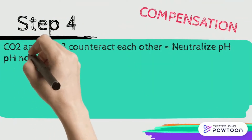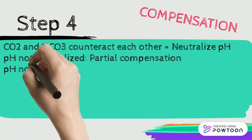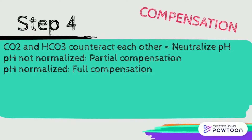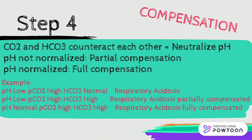Step four is checking for compensation. CO2 and bicarb counteract each other to neutralize the pH and bring it back to normal. If they're counteracting each other but haven't normalized the pH yet, this is partial compensation. If they've fully compensated, this is a fully compensated disturbance. For example, if the pH is low, CO2 is high — respiratory acidosis — and bicarb is also high, this is respiratory acidosis with partial compensation.